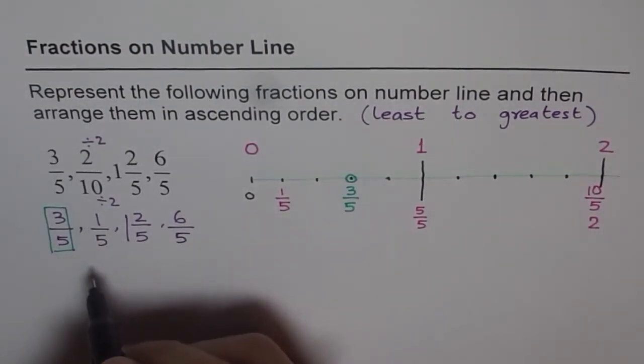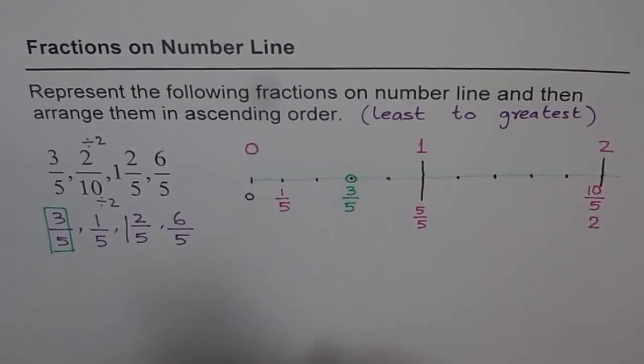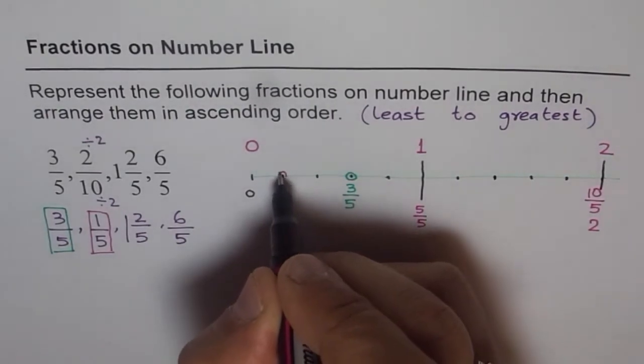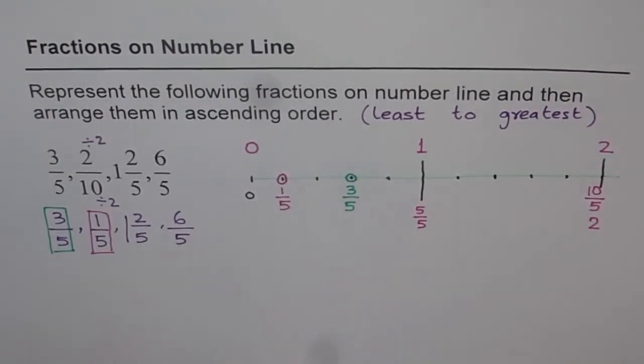Now second is 1 fifth. Well, we already have it. So let me just color it, mark it with red colors. This is what we have as 1 out of 5.